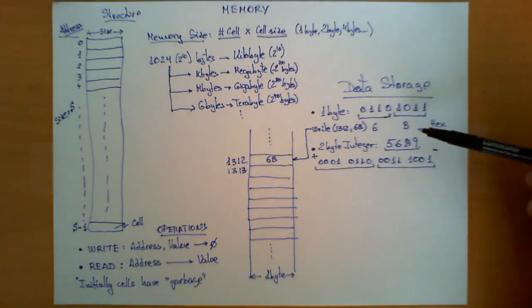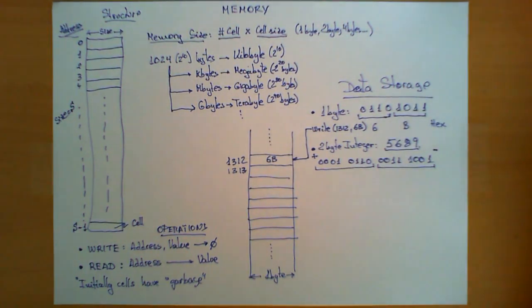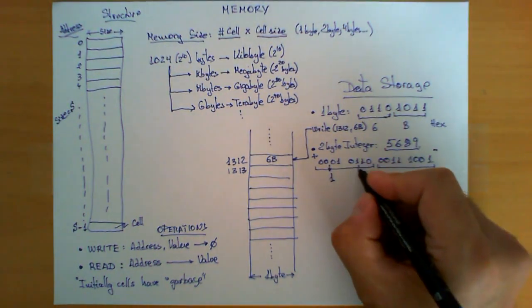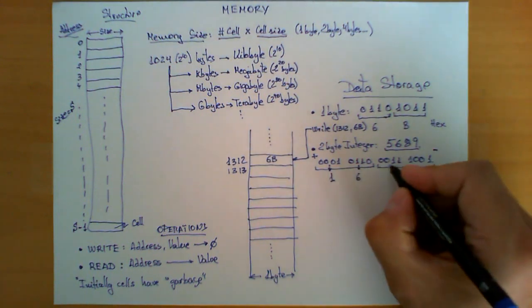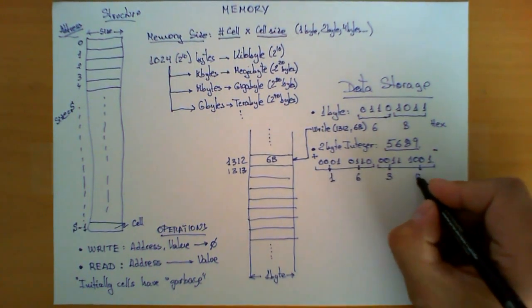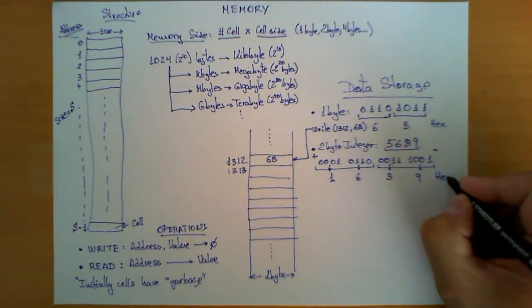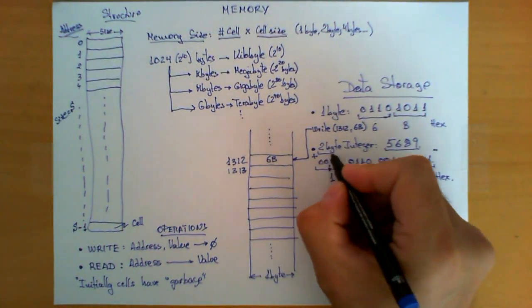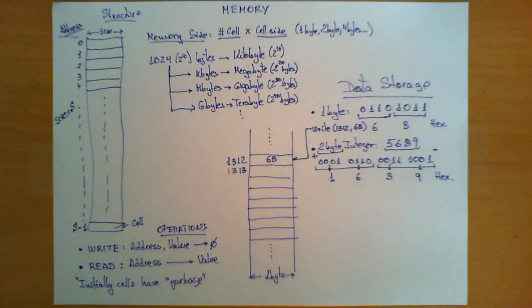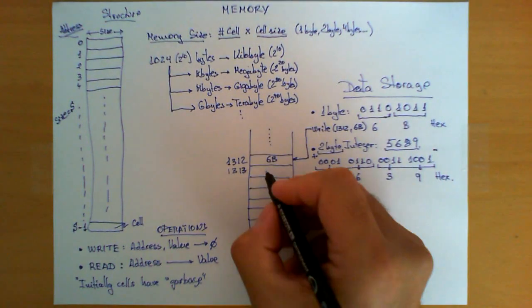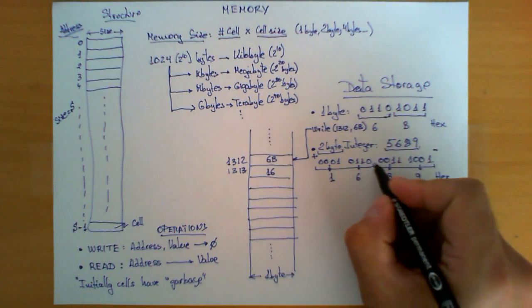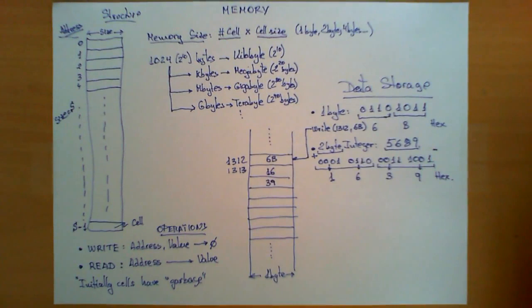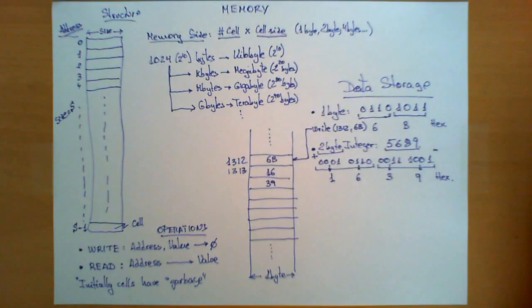This is the first byte, and this is the second byte. The most significant byte is on the left hand side, and the least significant byte is on the right. If we apply hexadecimal encoding, this corresponds with 16 for these bits, 39 for these. One option is to use this first cell and store here 16, which corresponds to the first 8 bits, and in the next cell store 39.